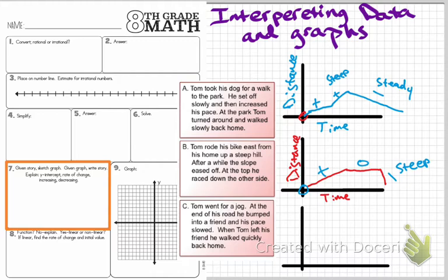Finally, we have our last example: Tom went for a jog. At the end of his road, he bumped into a friend and his pace slowed — notice his pace slows, but it doesn't stop. When Tom left his friend, he walked quickly back home. For all three of these graphs, I don't need any specific numbers; I'm just trying to represent this situation, so I haven't labeled numbers on my graphs and don't need specific slopes.